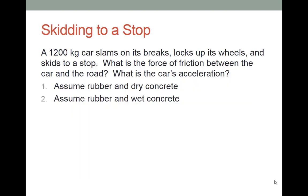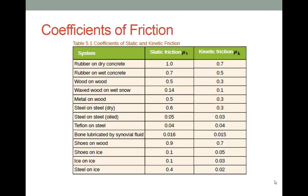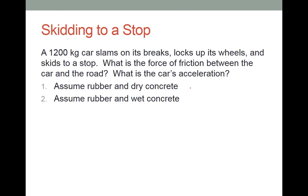Here is the first example. We have a 1200 kilogram car slamming on its brakes, locking up its wheels, and skidding to a stop. We want to know what is the force of friction between the car and the road and what is the car's acceleration, in two scenarios: rubber on dry concrete and rubber on wet concrete. From the table, we are moving so we want kinetic friction. On dry concrete it's 0.7; on wet concrete it's 0.5. So mu k is 0.7 for the first case and 0.5 for the second.